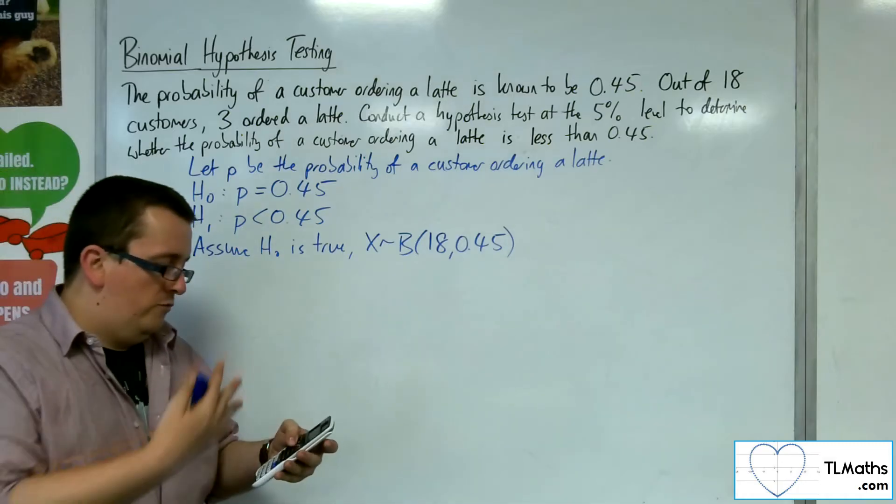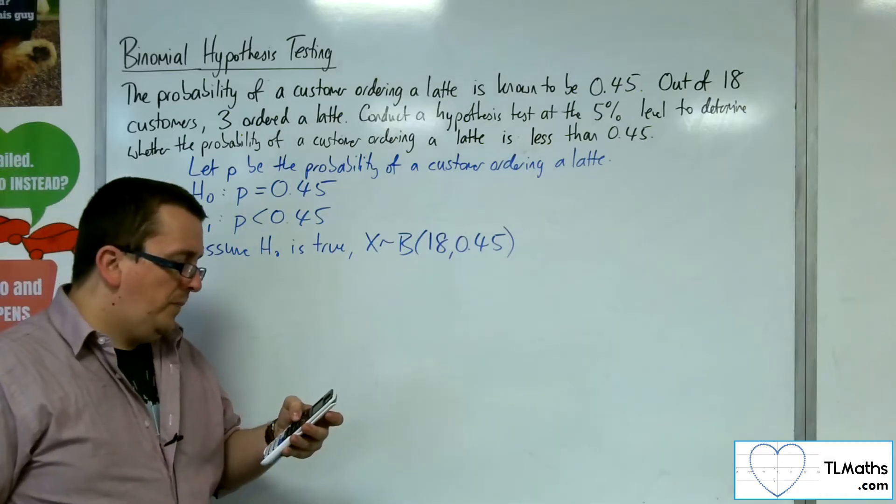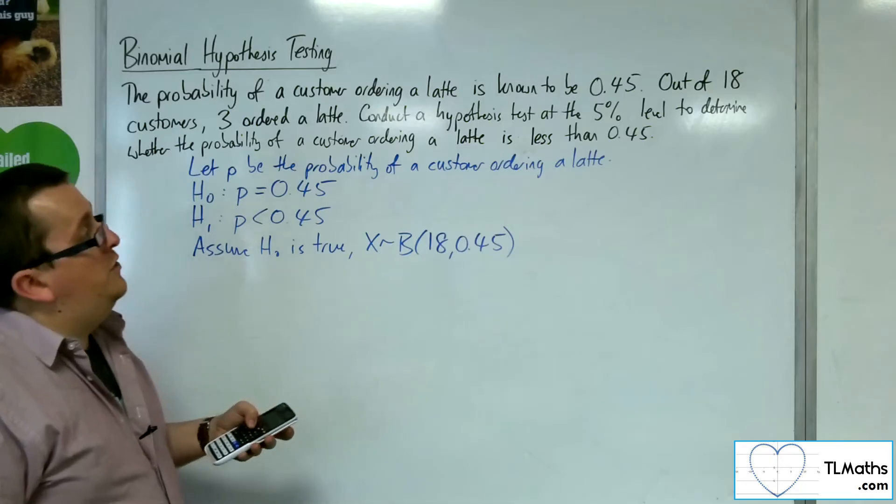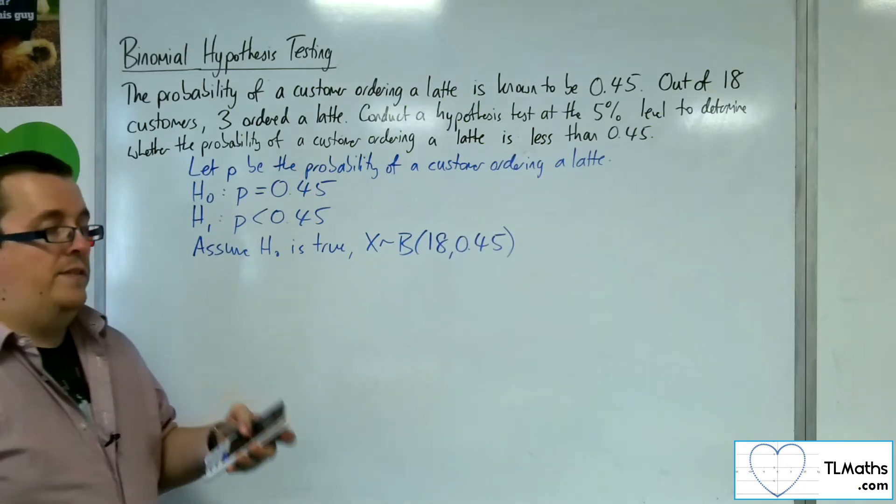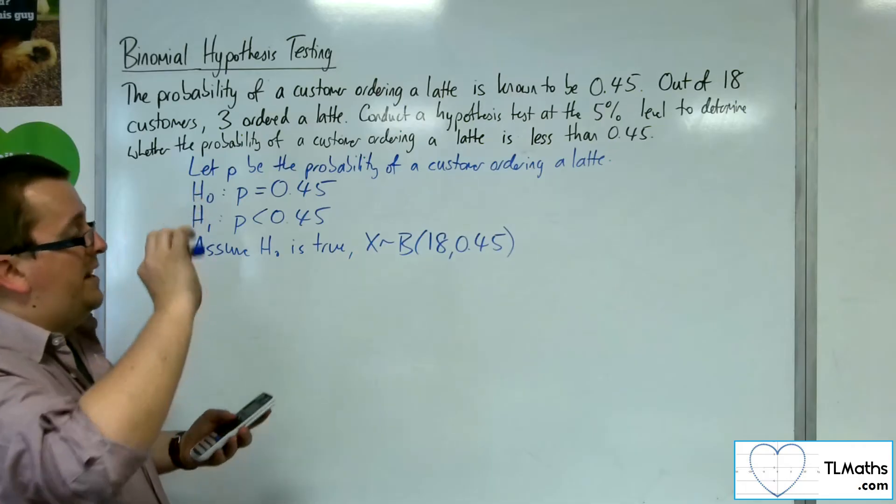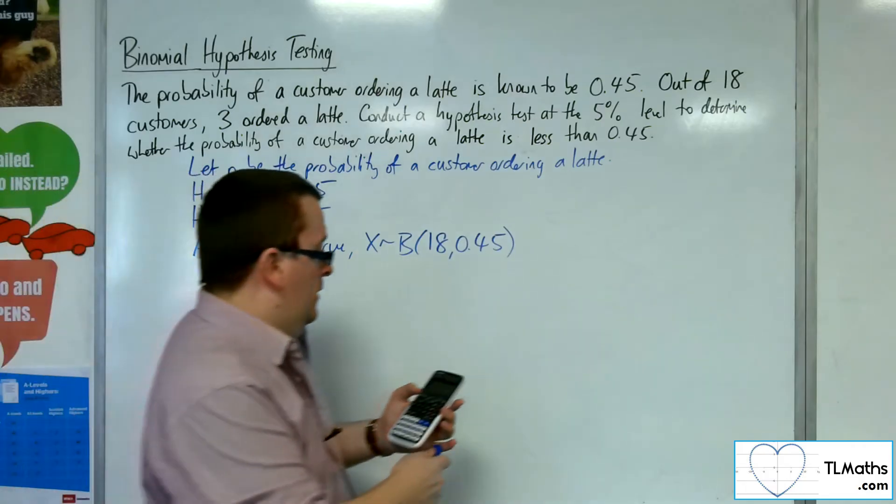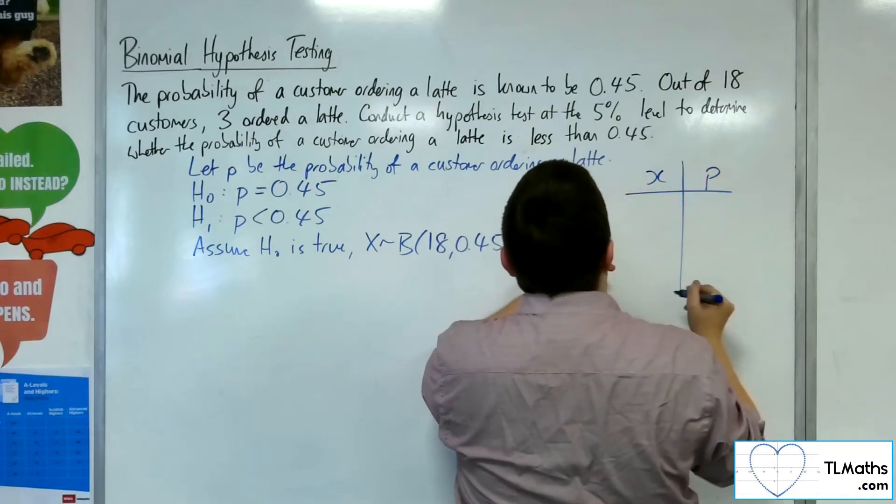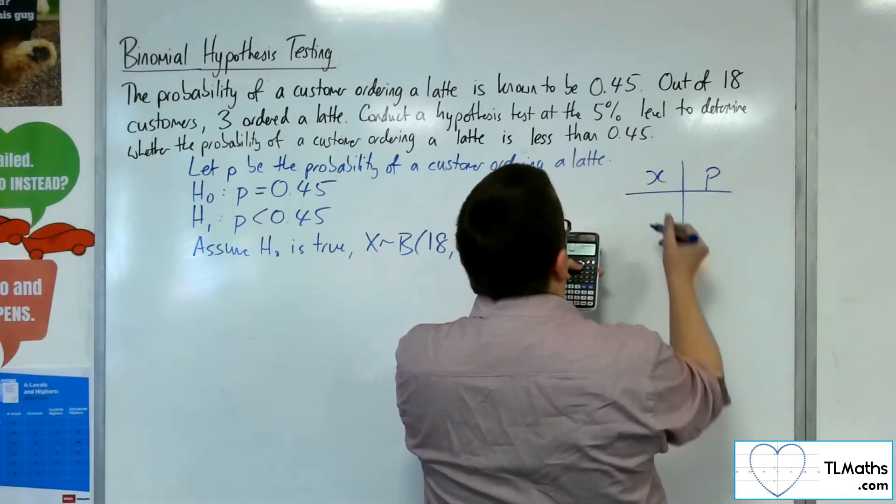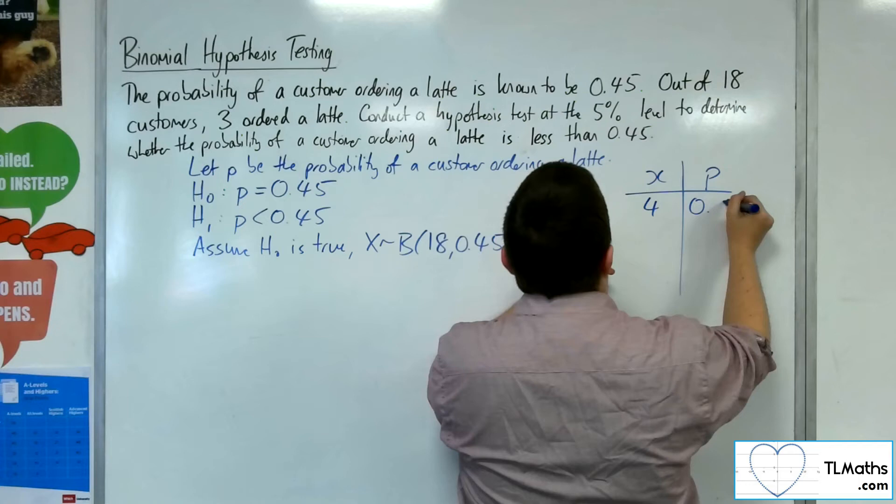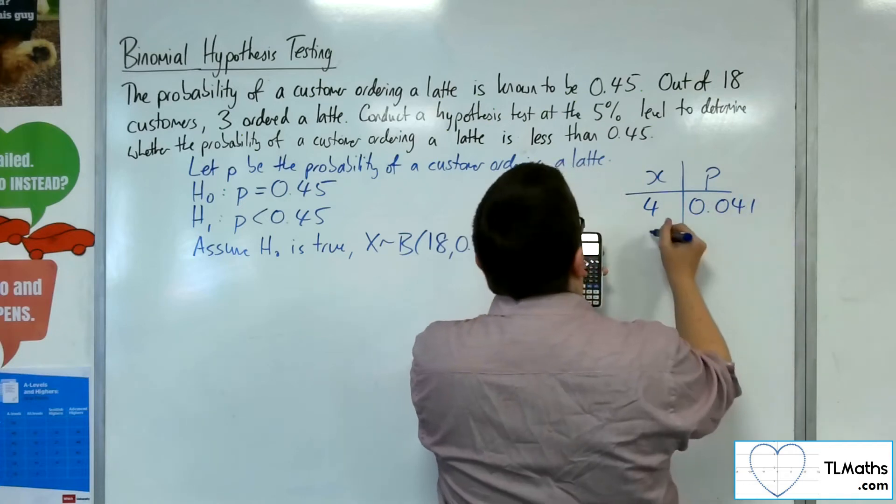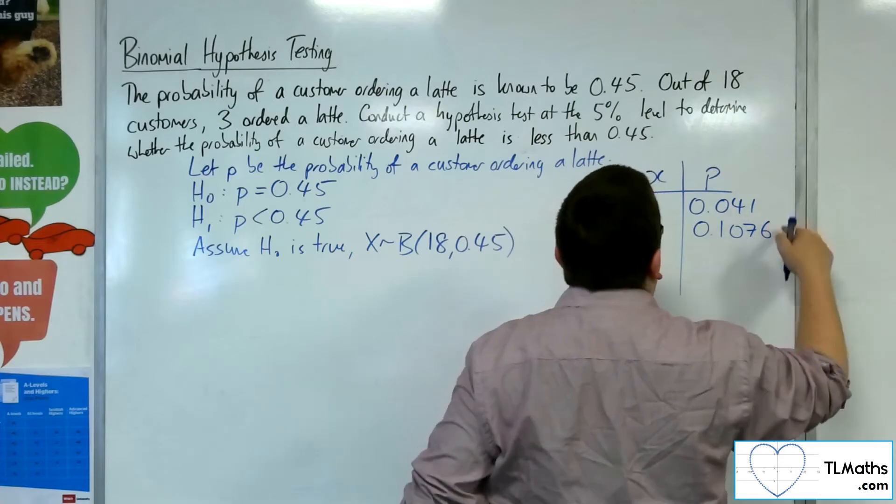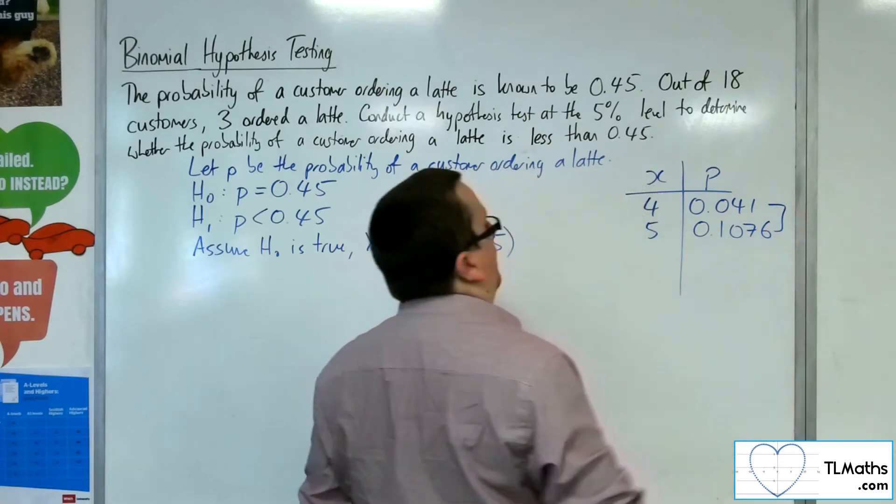Now we're looking down the right-hand side of the probabilities at 0.05, the significance level. On your tables, you should find that 4 gives you 0.041 and 5 gives you 0.1076. This is the overlap of the 5% level.